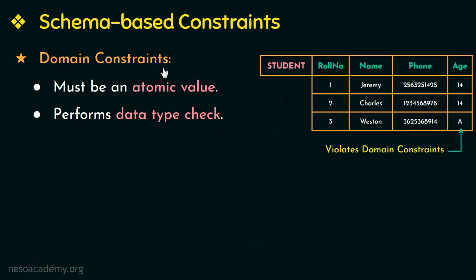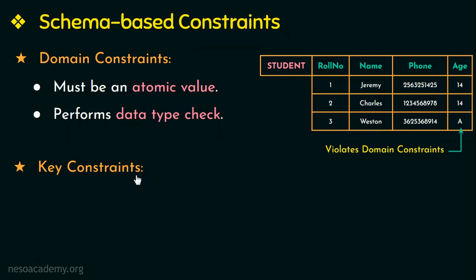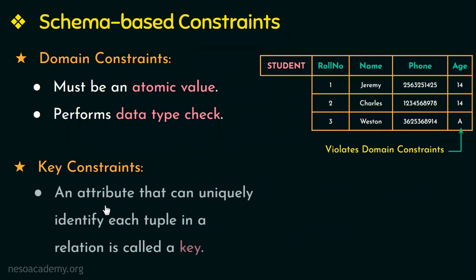The next type of constraint under schema-based constraints is key constraints. A relation is a set of tuples or rows. The relational model is based on set theory, and since elements in a set have to be unique, the tuples in a relation also have to be unique — you cannot have two tuples with the same values for all attributes. An attribute that can uniquely identify each tuple in a relation is called a key.